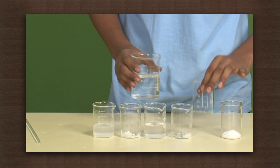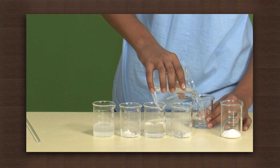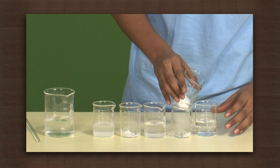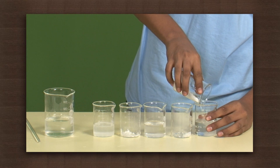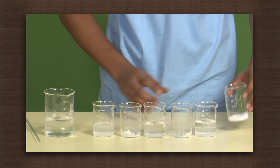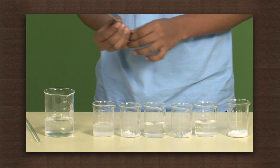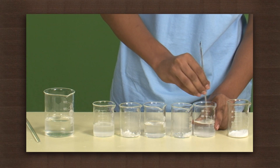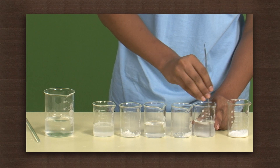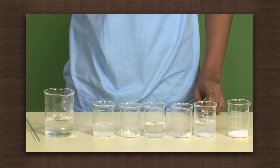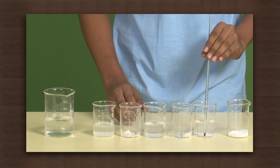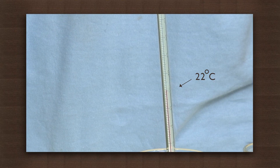Now add water to the third beaker and then add sodium chloride. Note the temperature — it is about 22 degrees.